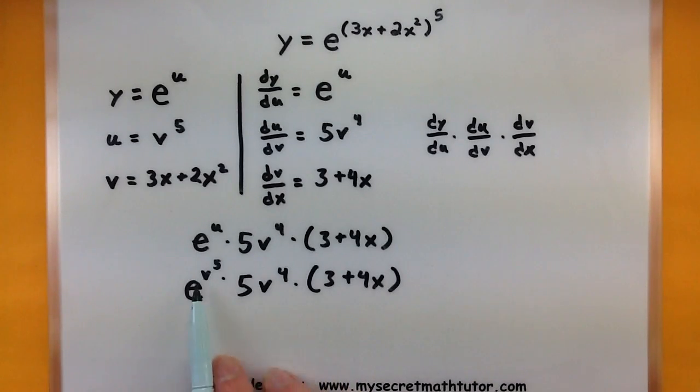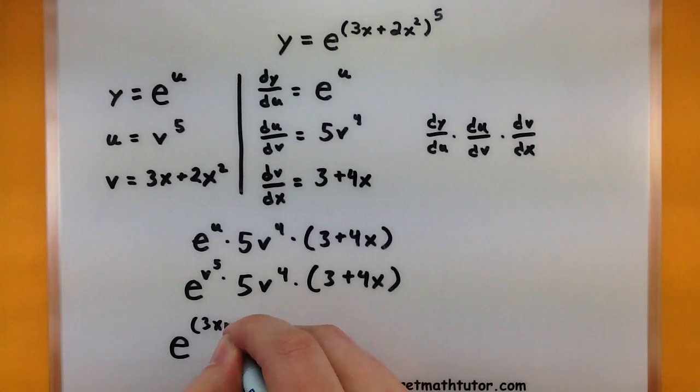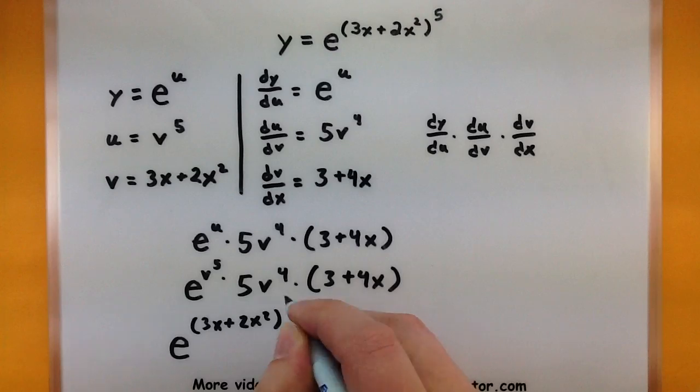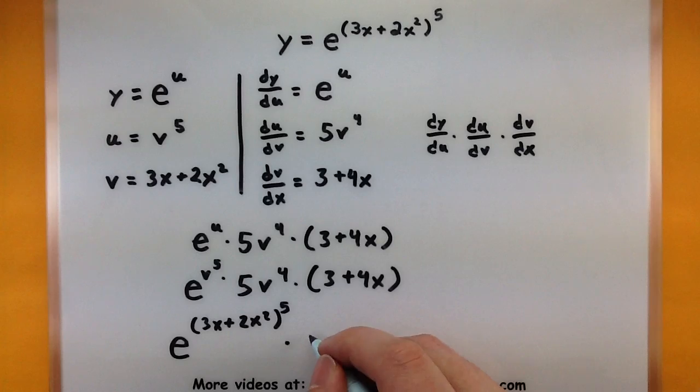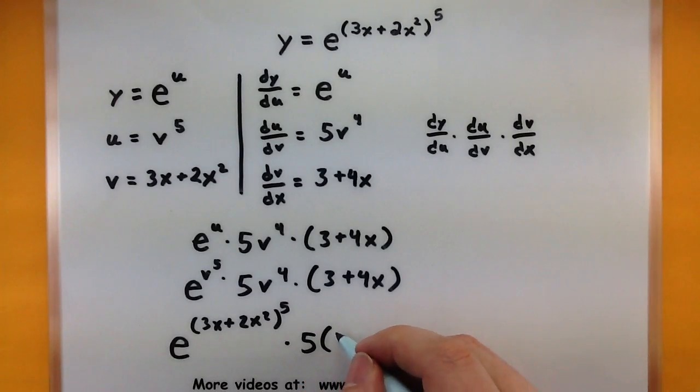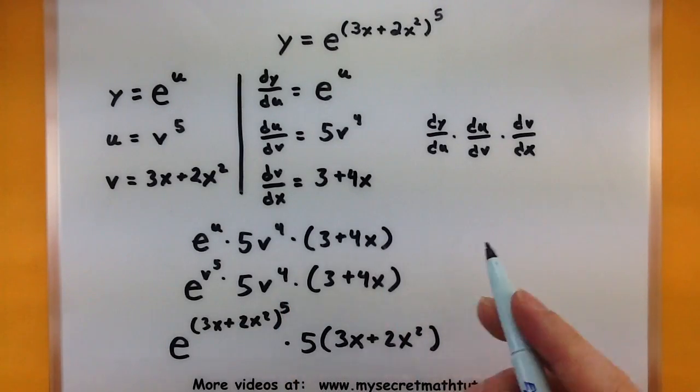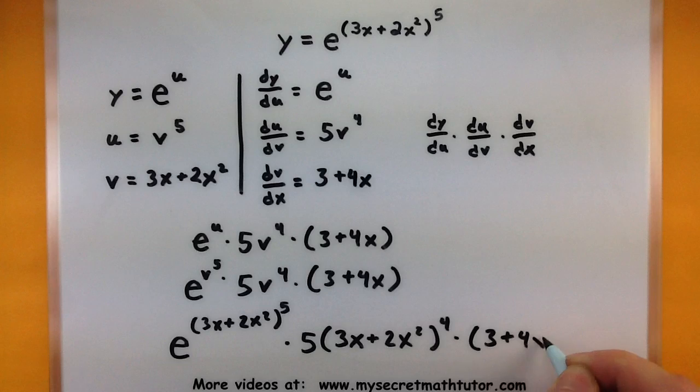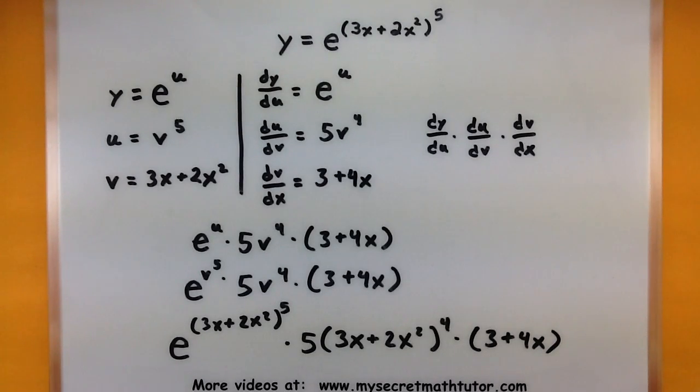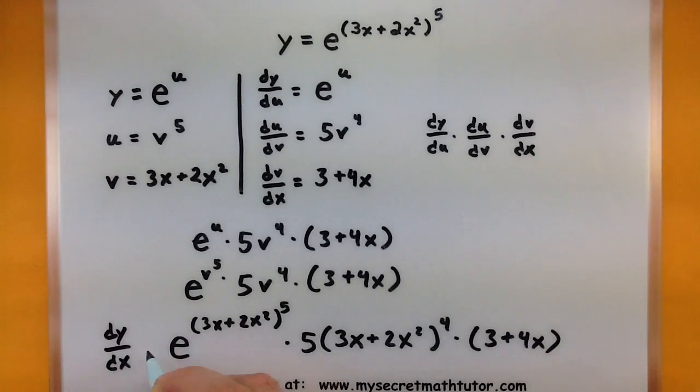Okay, getting a little bit closer. I still have these v's to replace, so let's go ahead and put those in there. So e, and what is v? Well, the first one will be 3x plus 2x squared. So all of that's still being raised to the fifth power, multiplied by 5, and we can put this v in here. 3x plus 2x squared. This one's being raised to the fourth power. Fourth times 3 plus 4x. Okay, and there, there we go. We've essentially found the derivative of y with respect to x in this case.